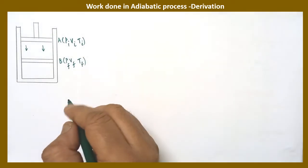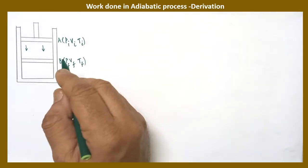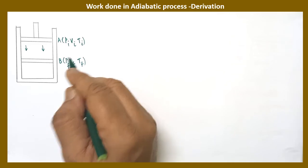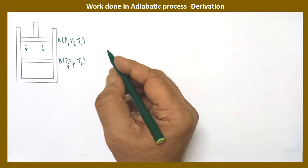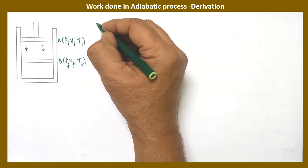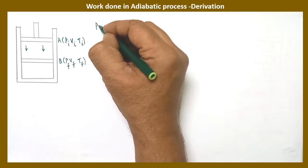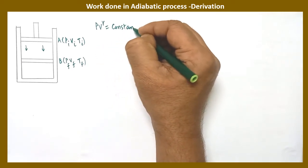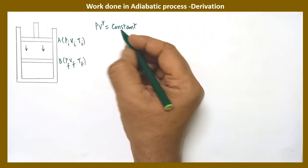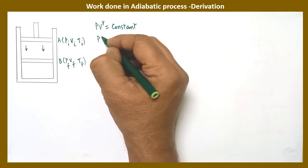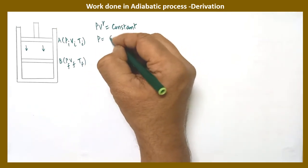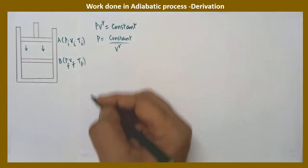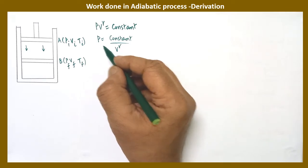We assume that the adiabatic process is carried out as a quasi-static process, and at every stage the ideal gas law is valid. Under these conditions, we use the equation of state for the adiabatic process: PV^γ = constant. Rearranging, P = constant / V^γ. This expression for P can be substituted into the work done equation.